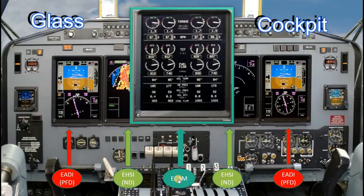The information the pilot gets on the ECAM is related to engine parameters — total inlet temperatures, EGTs, RPMs, N1, N2, oil pressures, and oil temperatures. Engine temperatures, engine pressures, and thrust information are all related to this ECAM display.